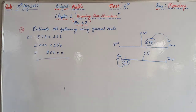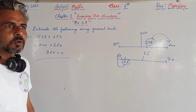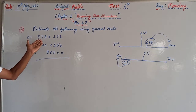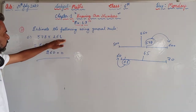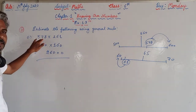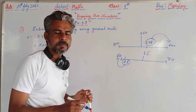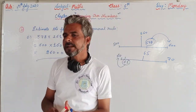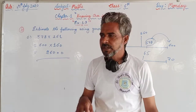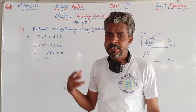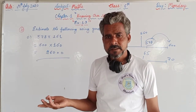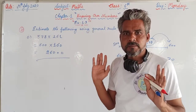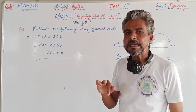So the estimated product of 578 × 161 is approximately 96,000. Note that the answer can vary because one can round off both numbers to the nearest hundred, or round one to the nearest hundred and the other to the nearest tens. So the answers can be different — you are not supposed to worry about that.